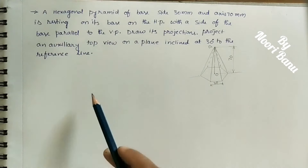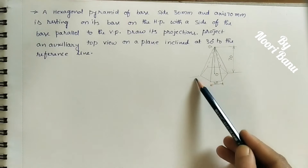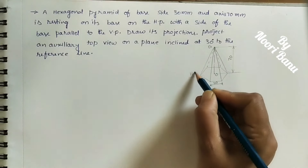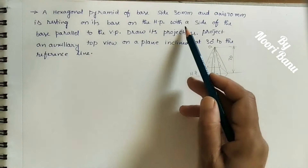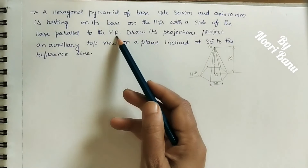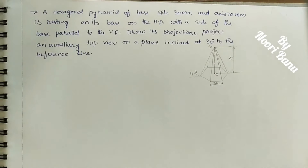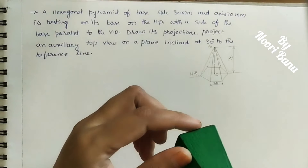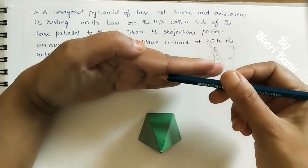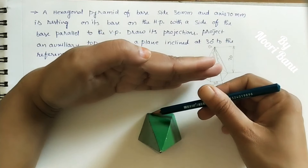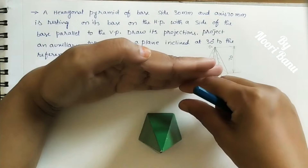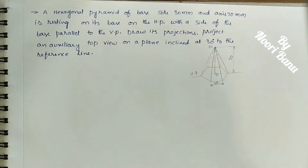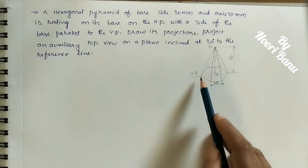The pyramid is resting on its base on the HP — the horizontal plane. So this base is on the horizontal plane. Next data: with a side of the base parallel to the VP. So take any one side; it is parallel to the vertical plane. That means the distance between that base side and the vertical plane is constant. Now the position of the hexagon is set correctly.